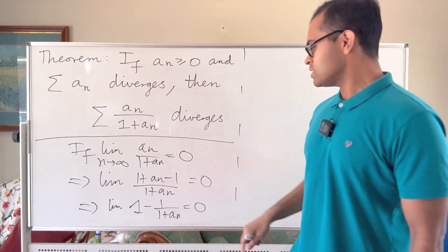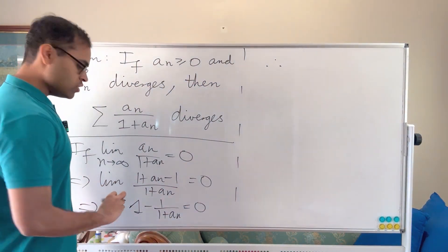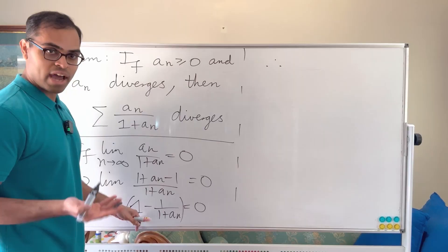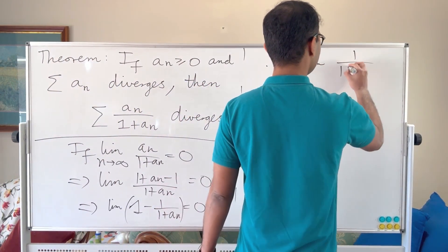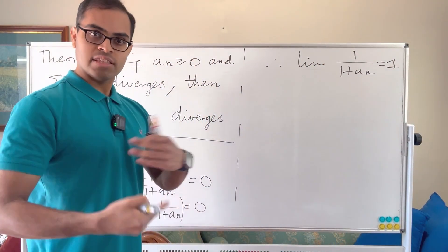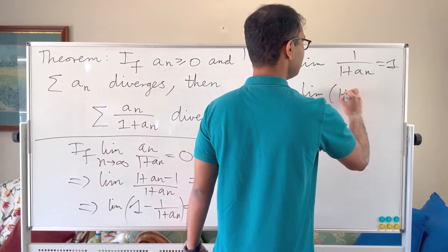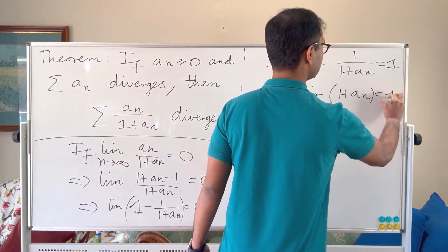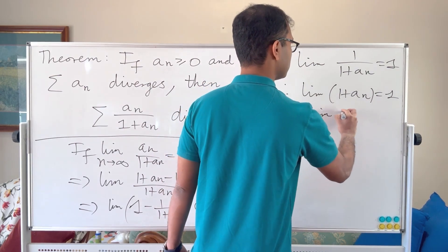So knowing that that limit is 0, let's now therefore conclude: using limit laws we know the limit of 1 is 1, so therefore we know that the limit of 1 over 1 plus an is going to equal 1. And now using limit laws we can take the reciprocal, so therefore the limit of 1 plus an is going to equal 1, and therefore that implies that the limit of an is going to equal 0.